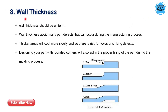Our next factor is wall thickness. While designing the part, we need to ensure that the wall thickness is consistent or uniform throughout the part. This helps to avoid many part defects that can occur during the manufacturing process. If your part has variable thickness — somewhere high, somewhere low — it causes stress concentration and shrinkage problems. When plastic melts, it flows to the area of least resistance.